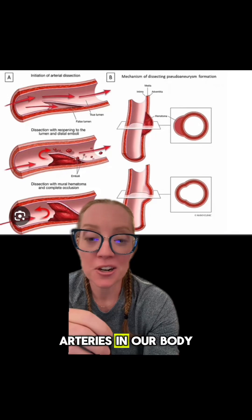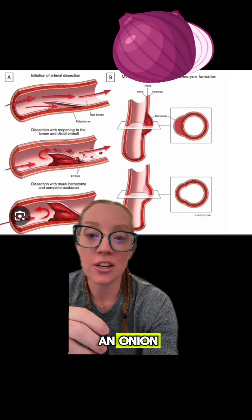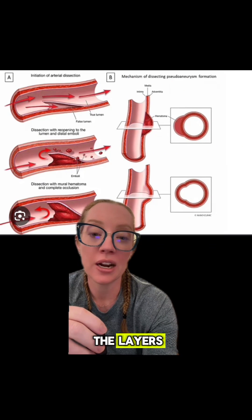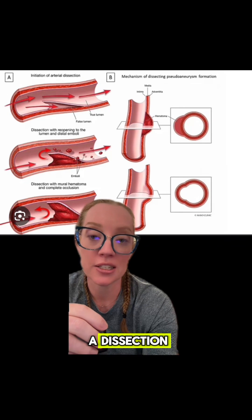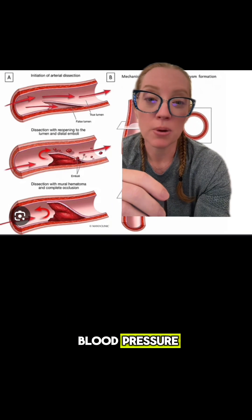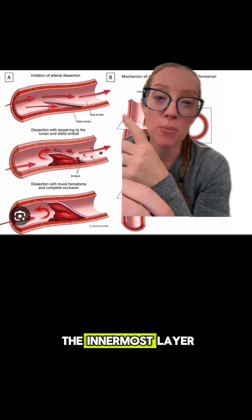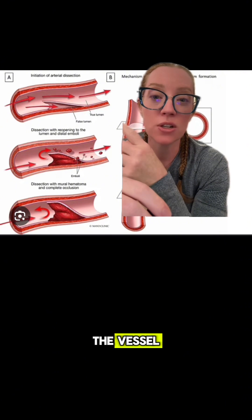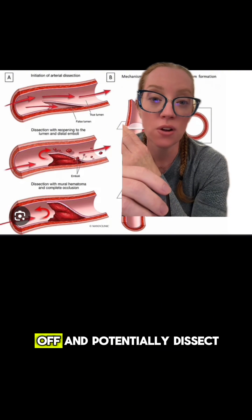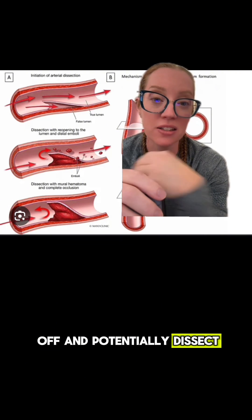Arteries in our body have three layers like an onion, so if you have weakness in one of the layers it could potentially cause a dissection. If a patient has a spike in their blood pressure, the intimal lining — the innermost layer of the vessel — can begin to lift off and potentially dissect.